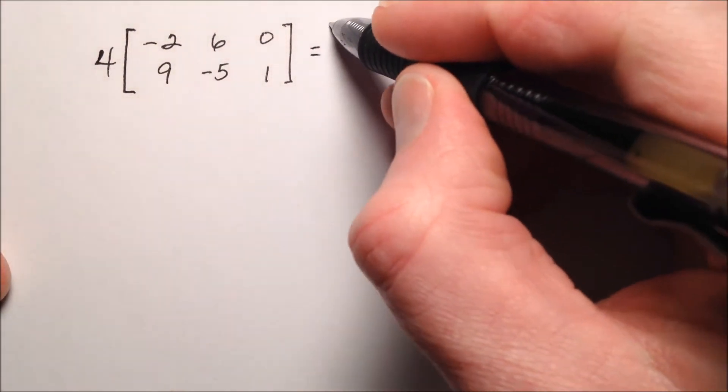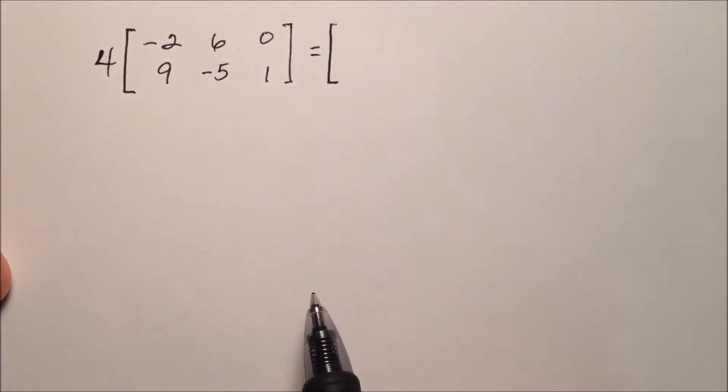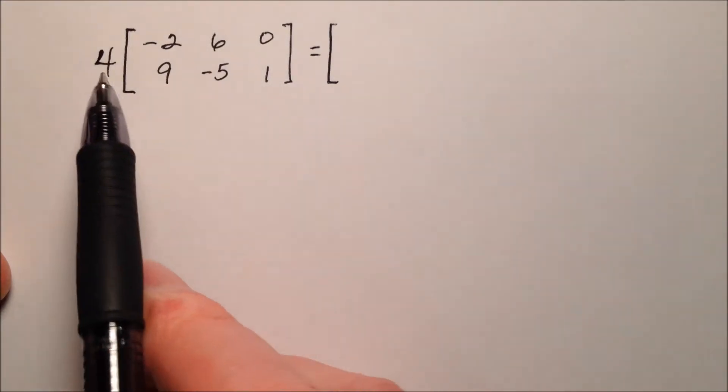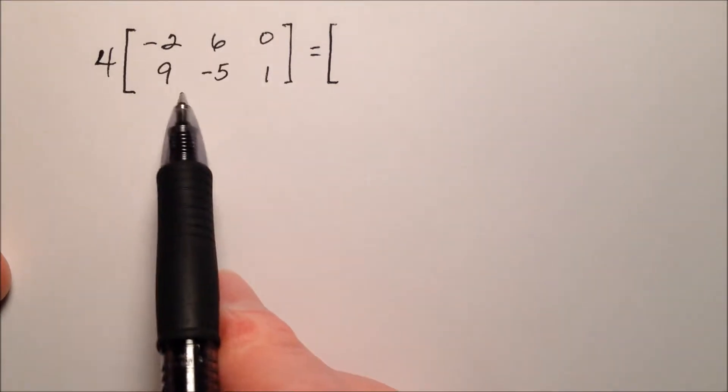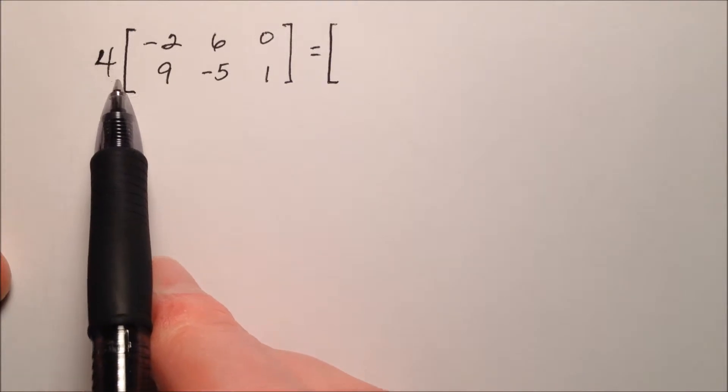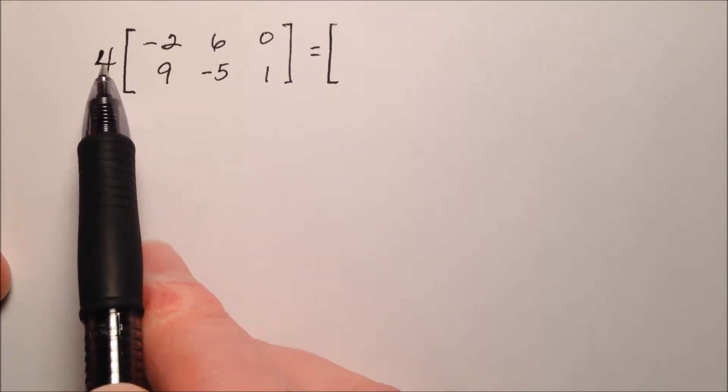So when I do that, I will have another 2 by 3 matrix. The dimensions don't change, but I'm going to have all of these entries multiplied by 4, or what we call scaled by a factor of 4.